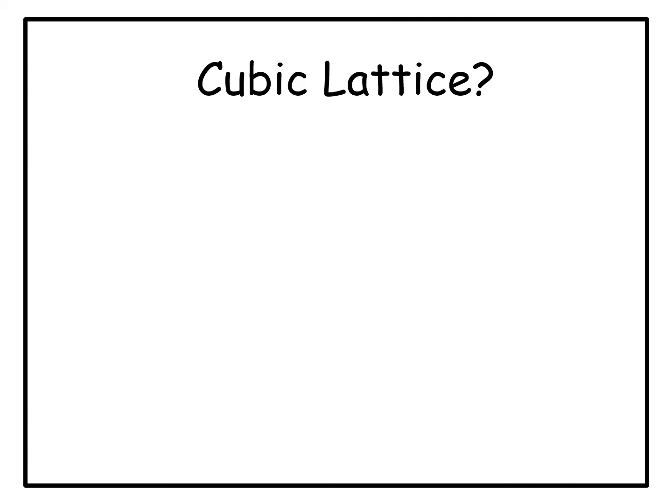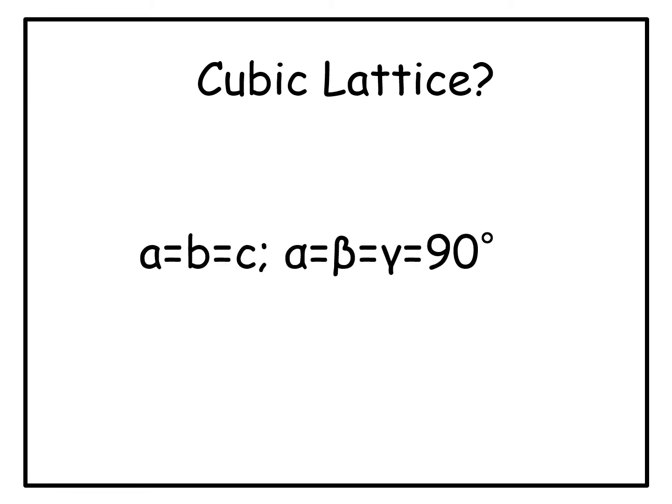What is a cubic lattice? It is defined in terms of the lattice parameters of the conventional unit cell: a equals b equals c, and alpha equals beta equals gamma equals 90 degrees. These are the lattice parameters of a cubic unit cell.